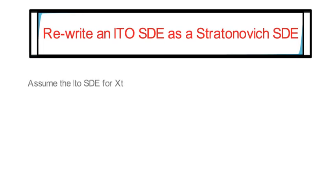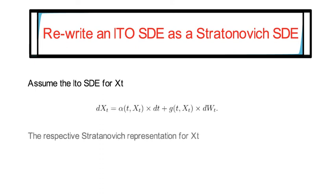So, assume the ITO SDE for XT reads as follows. The respective Stratonovich representation for XT would look like that.